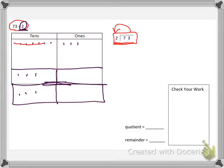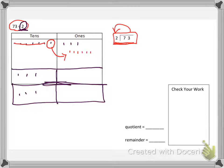And we are left with this 1 ten. And this 10 we are going to decompose and give it to the ones — we're going to put 10 ones: 1, 2, 3, 4, 5, 6, 7, 8, 9, 10. Because we had 10 left over, we have to give it now to the ones.